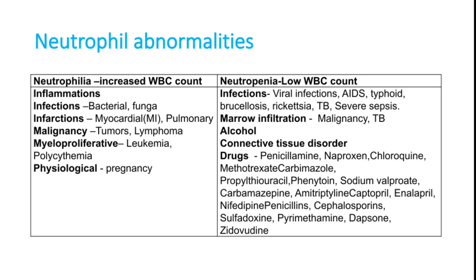Leukemoid reaction means elevated blood counts without malignant cells — related to inflammation where the bone marrow overproduces cells resembling leukemia. Physiologically, pregnancy can also increase blood count. Neutropenia (low WBC count) occurs mainly in viral infections, bacterial infections like typhoid, brucellosis, rickettsia, and TB. Bone marrow infiltration, severe sepsis, alcohol, and connective tissue disorders like SLE can also cause neutropenia.